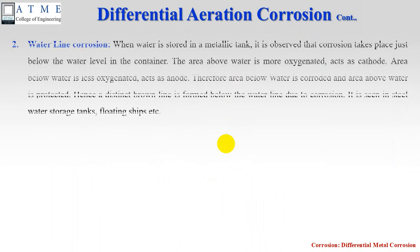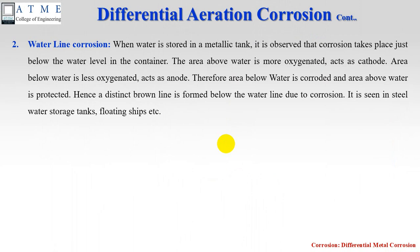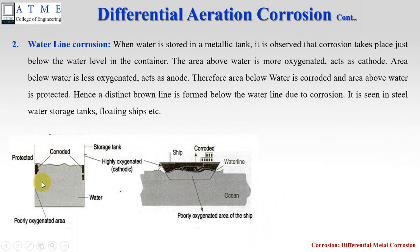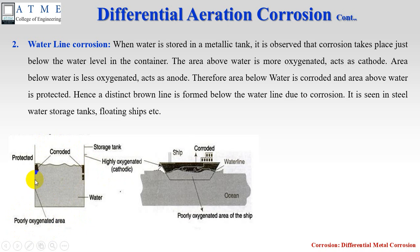Now we shall move on to the second type, which we call water line corrosion. In the figure, a metallic tank stores water for a longer duration. The same metallic tank is exposed to two different oxygenated areas — one inside the water and one outside. The surface outside the water has high oxygen concentration, while the surface inside the water has less oxygen concentration. The part inside the water becomes the anode, and the part outside becomes the cathode.